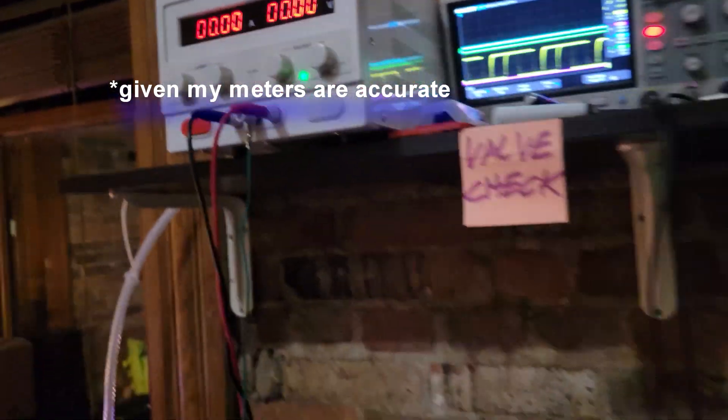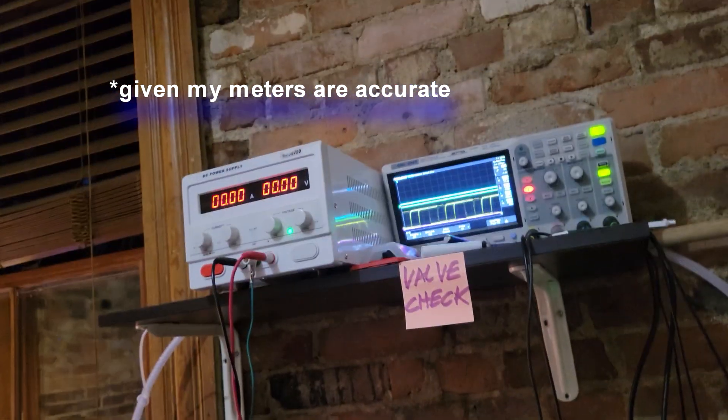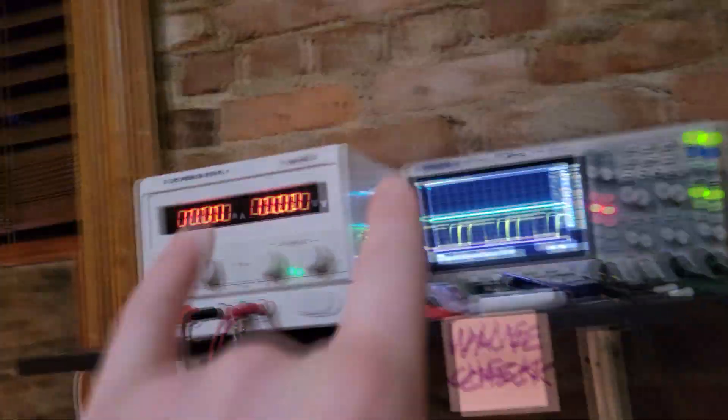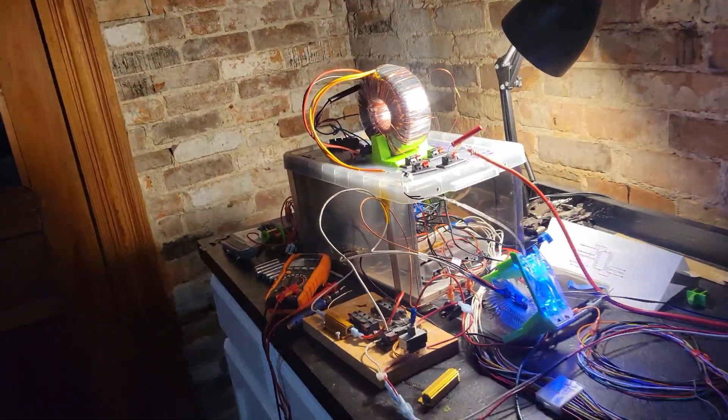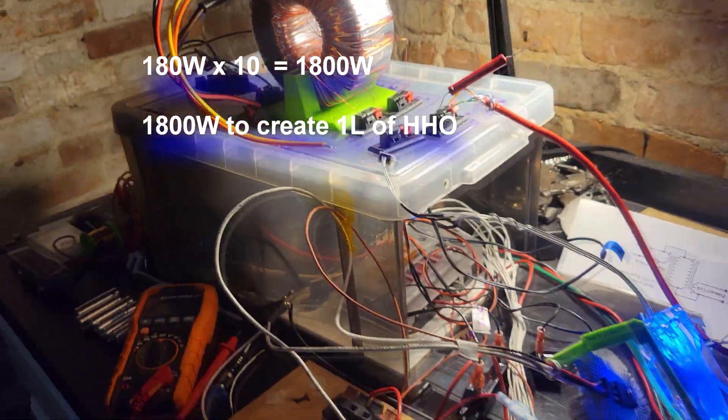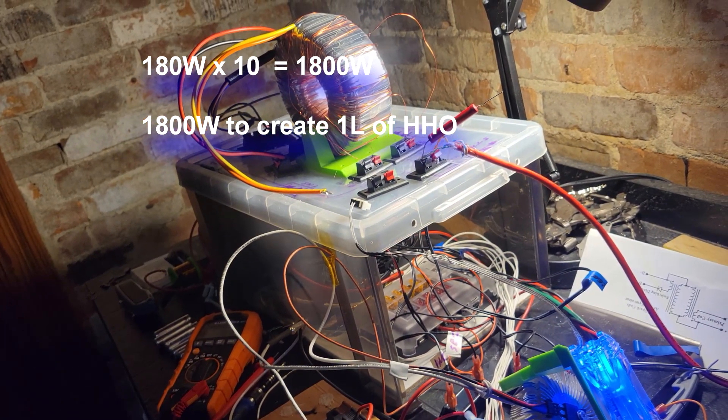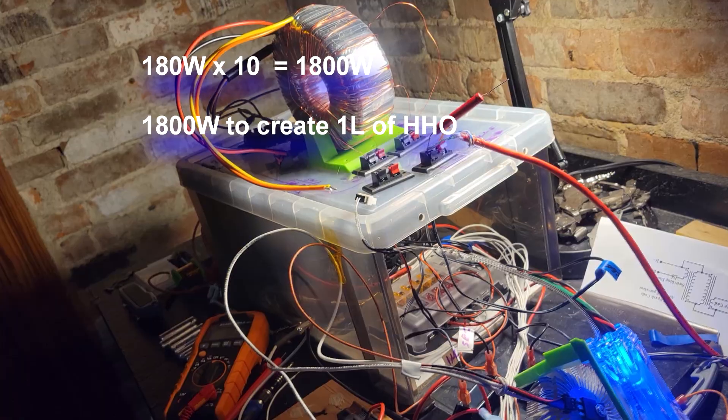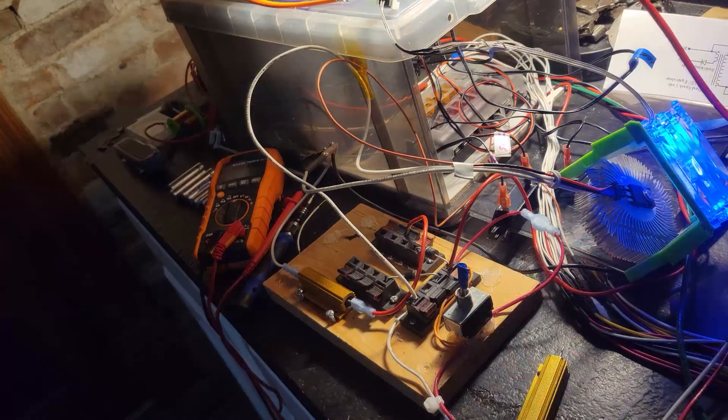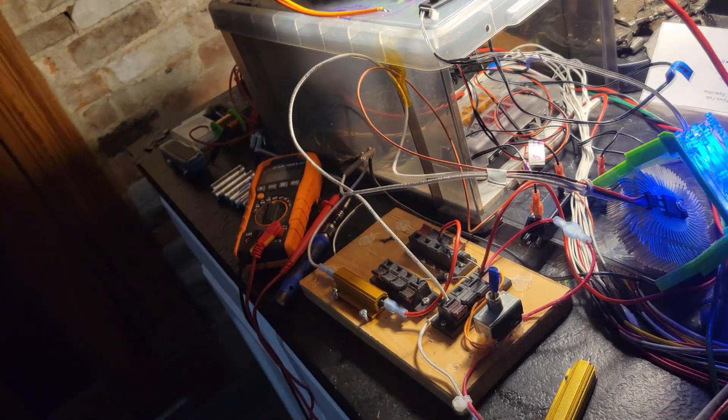Now if we take that at the air level where I'm considering consuming 180 watts to create this, actual circuit input power, we would multiply that by 10 and we would get 1800 watts of consumed power to create one liter of hydrogen per minute.